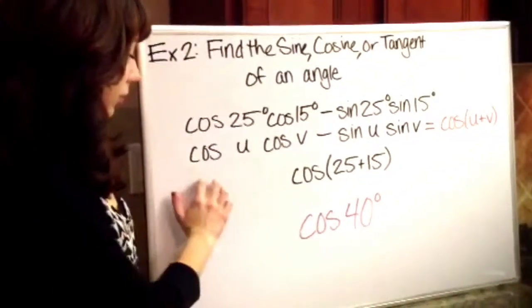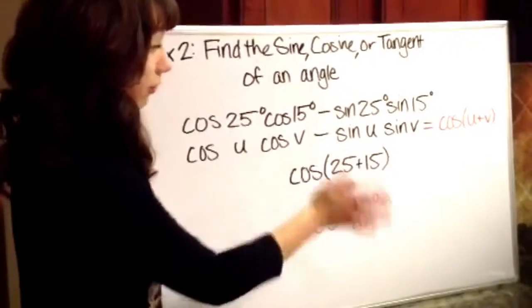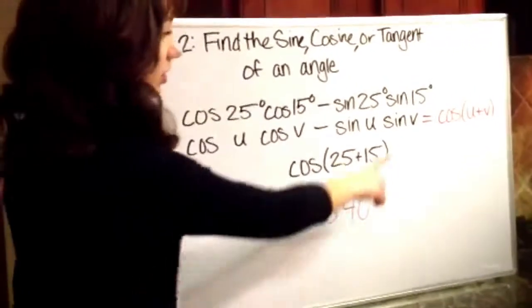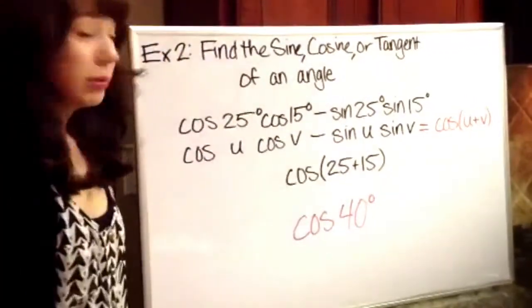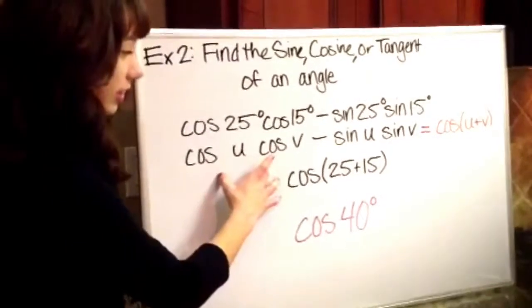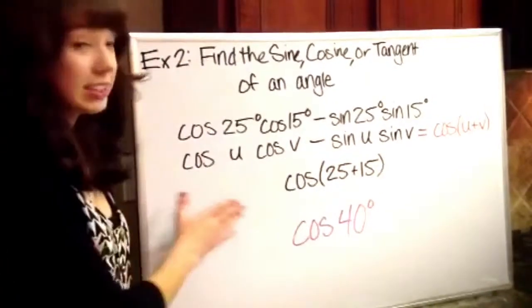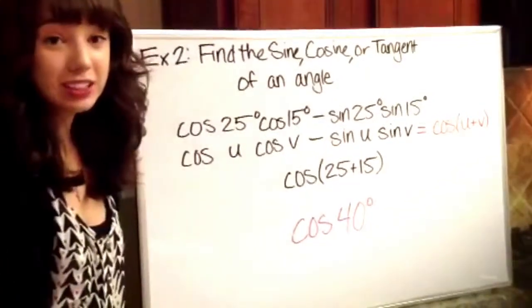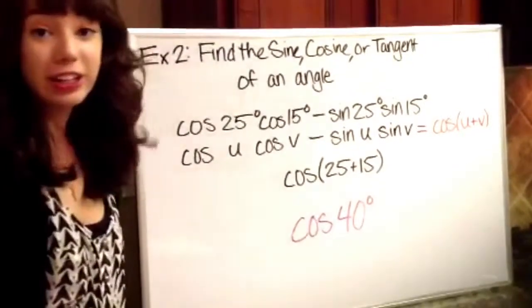So when we plug in cosine u, cosine v, our formula, we find out that this is cosine u plus v. The way we know this is because the cosines are together and the sines are together. Whenever the cosines and the sines are together, we know that that's the sum and difference for cosines.